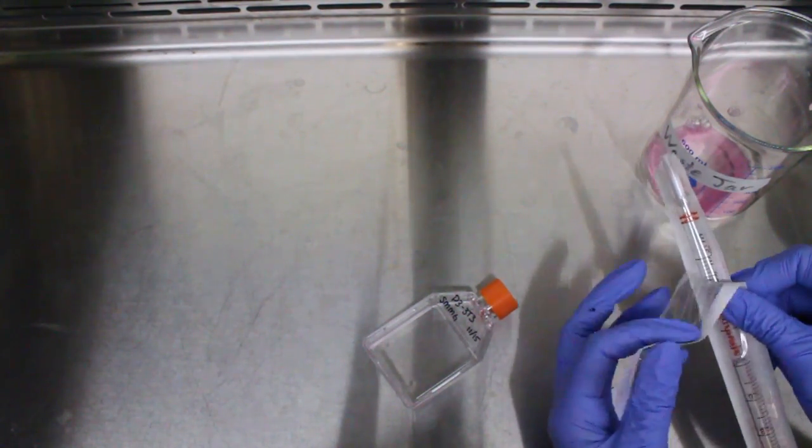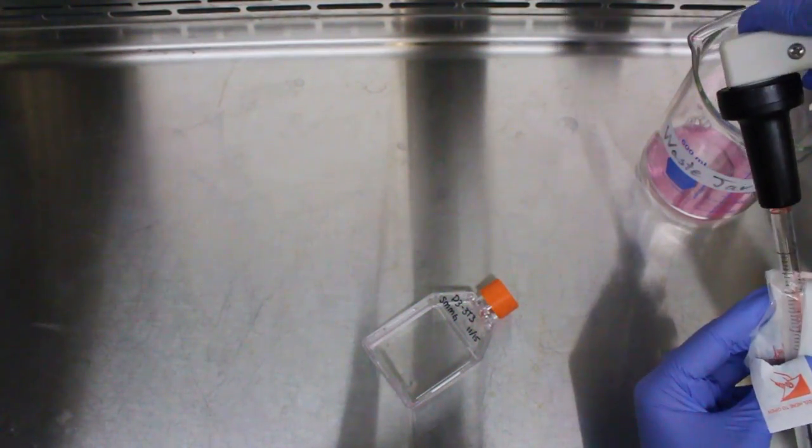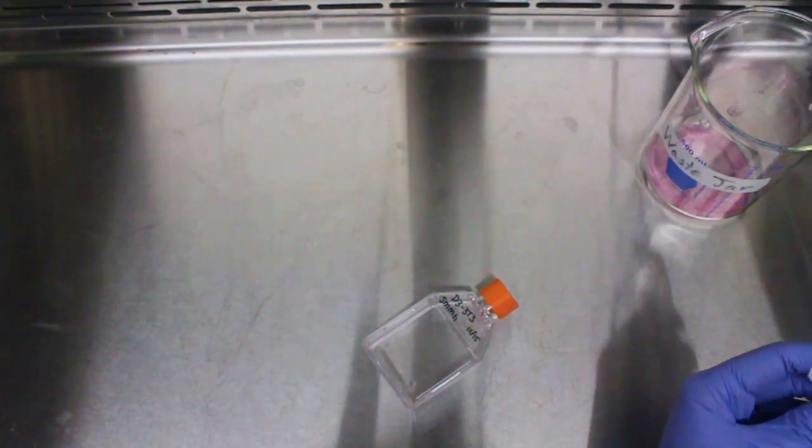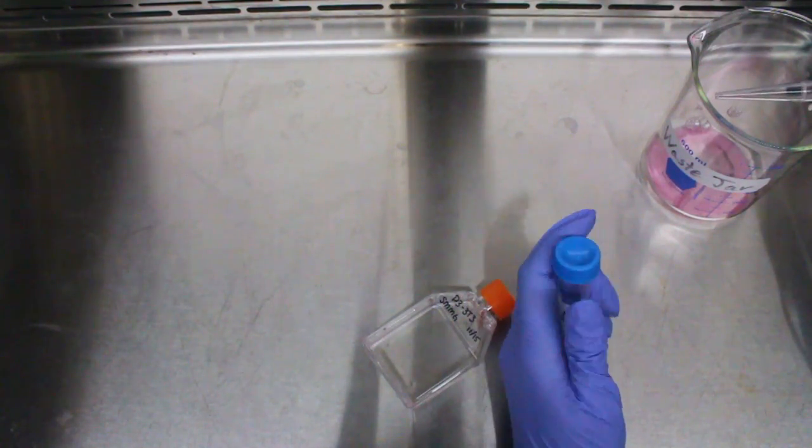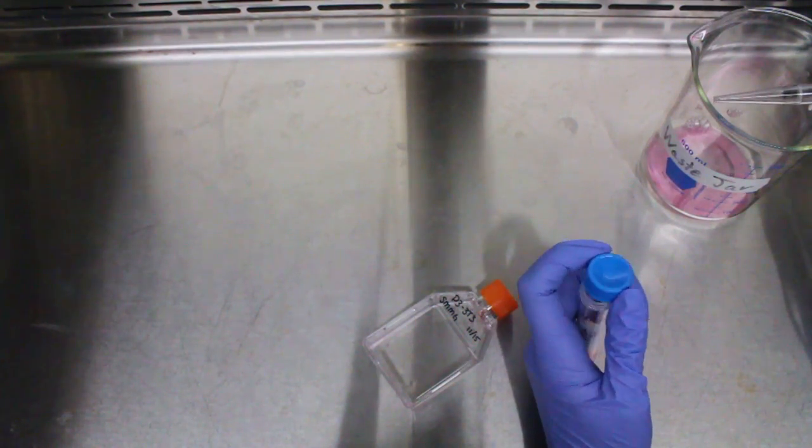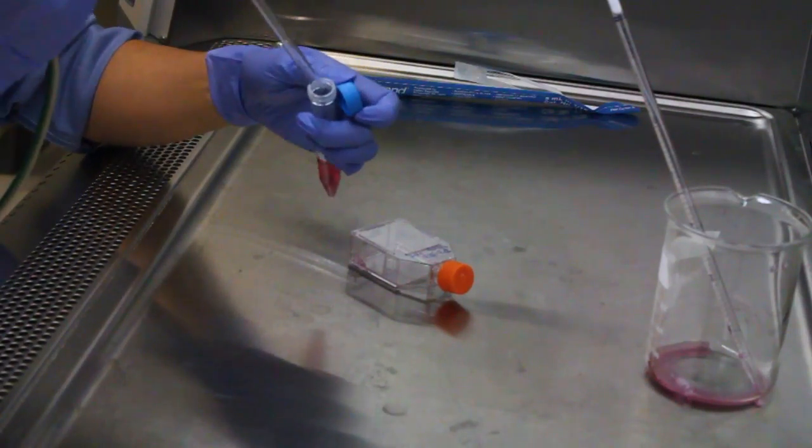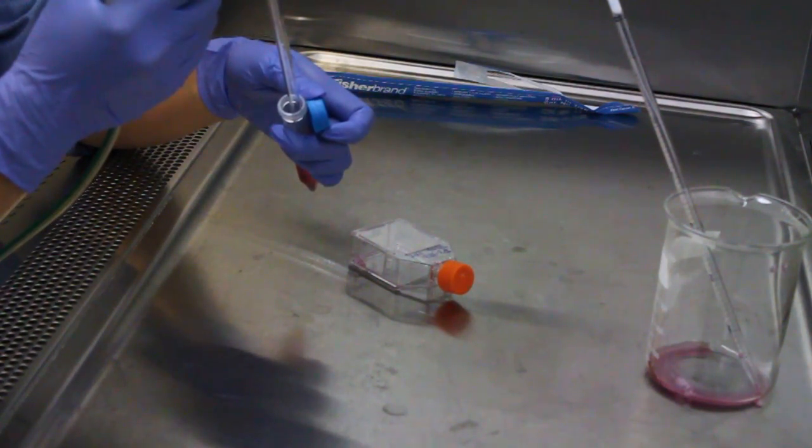Grab a new serological pipette and remember to always use sterile technique when opening your pipettes. We will be using trypsin to detach the cells today. Draw 2ml of trypsin and dispense it into the flask of cells.